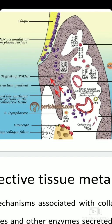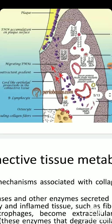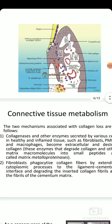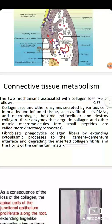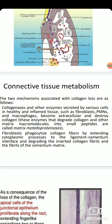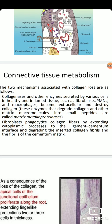These cytokines from inflamed and non-inflamed cells lead to bone destruction. Connective tissue metabolism occurs generally through two mechanisms: first, collagenases and other enzymes secreted by various cells in healthy and inflamed tissues — such as fibroblasts, polymorphonuclear leukocytes, and macrophages — become extracellular and destroy collagen. These enzymes degrade collagen and other matrix macromolecules into small peptides called matrix metalloproteinases (MMPs). The second mechanism involves fibroblast phagocytosis.